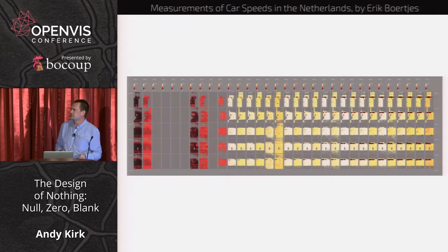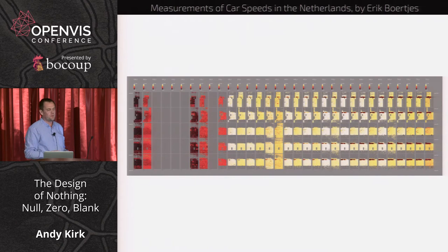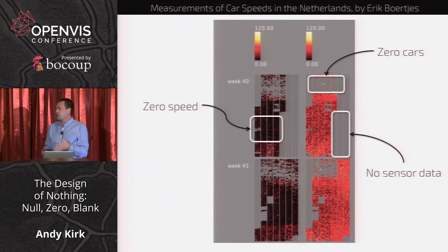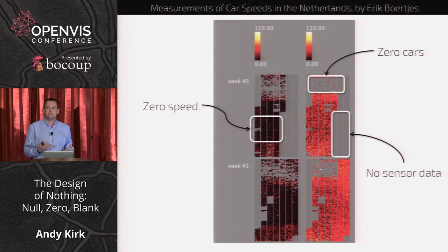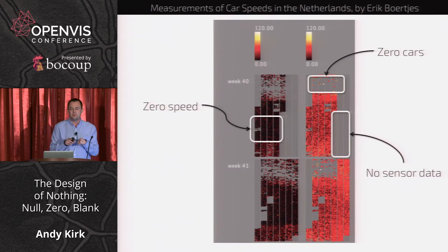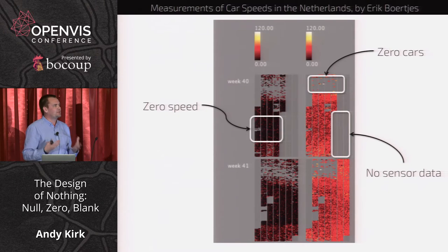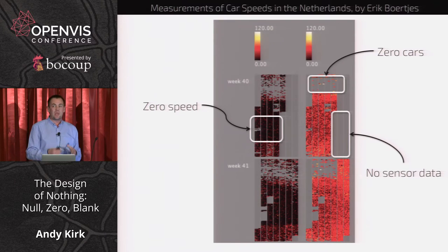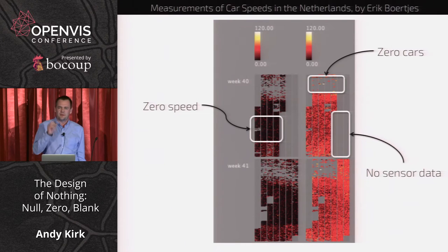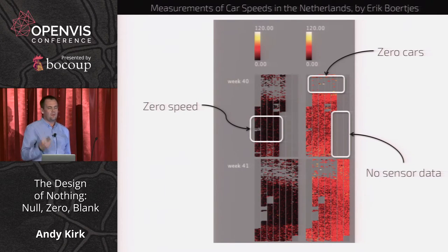This is a project to visualize measurements of car speeds in the Netherlands by Eric — let's call him Eric B. What we've got here is a number of things in one finely balanced display: zero speeds in black, no cars on the road in an empty gray area, but also big chunks of sensor failure to capture data in the same gray. We can only judge that absence of sensor data based on the fact that we expect data to be there — a very difficult balancing act.